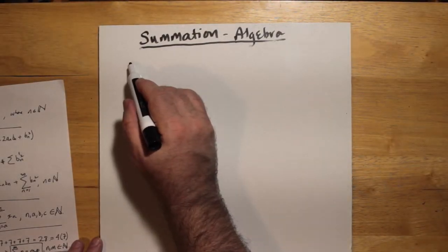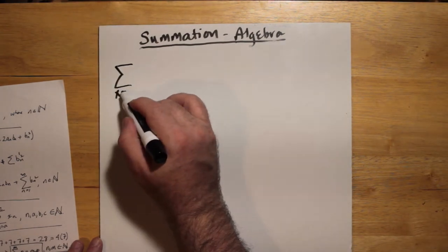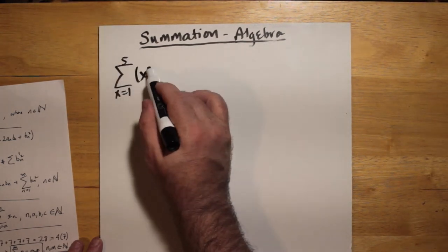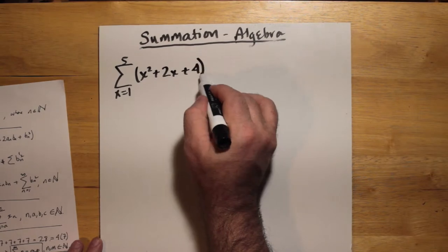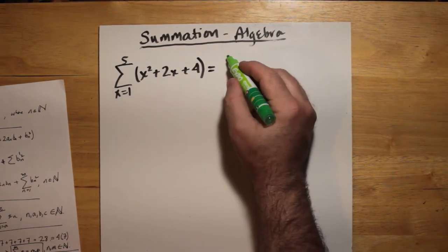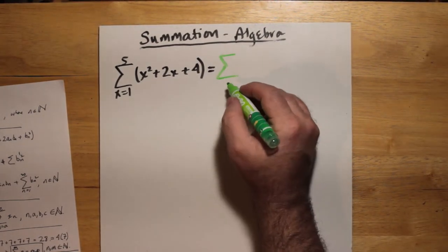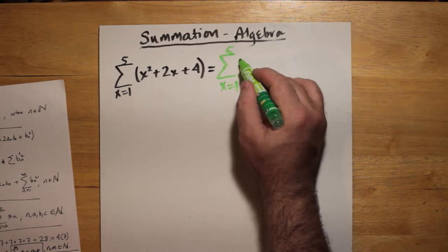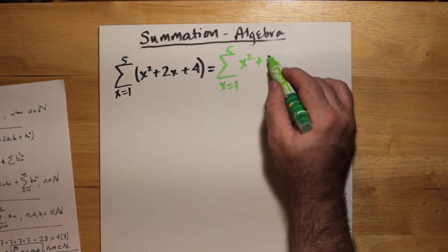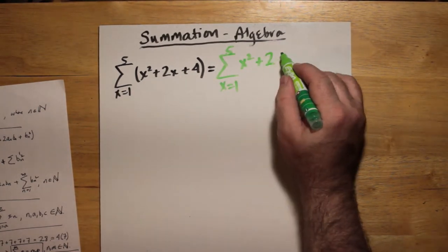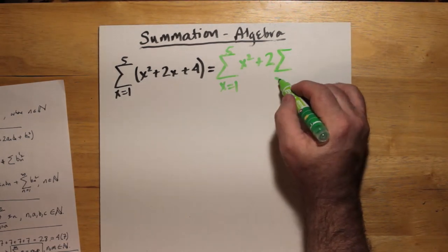So, when we try a slightly more complicated formula like this quadratic here, we can break up the terms as we're doing here. x equals 1 to 5 of x squared. Take the 2 outside the sum like we did in the last example and have x goes from 1 to 5 of x and x goes from 1 to 5 of 4.